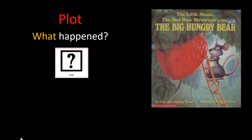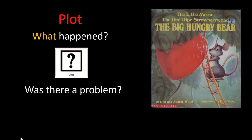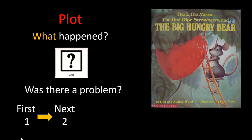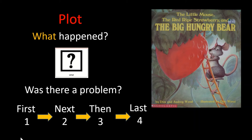And then we can talk about the plot of the story. When we talk about the plot, we're going to ask: what happened? Was there a problem in the story that needed to be solved? We might talk about what happened first, what came next, then what happened, and finally the last part of the story. Now let's talk about the plot. Remember, the plot is what happens in the story.